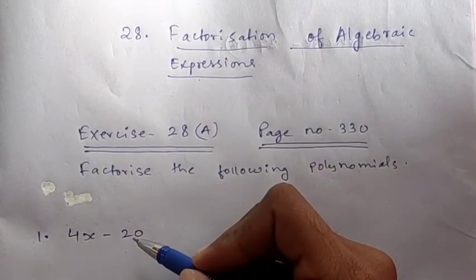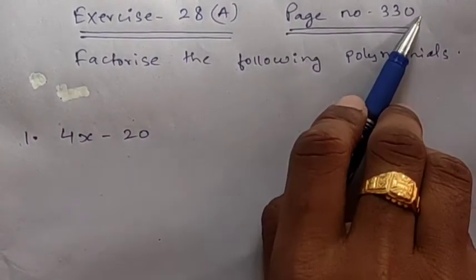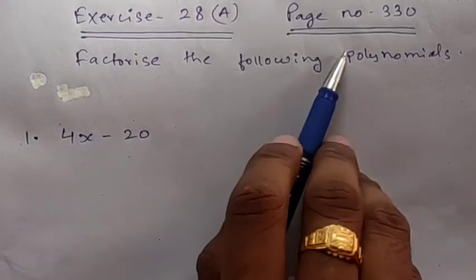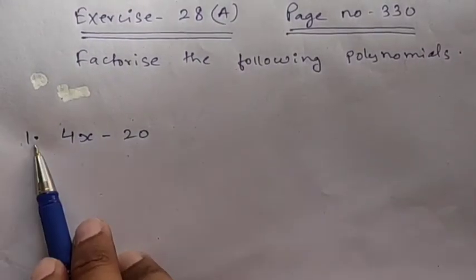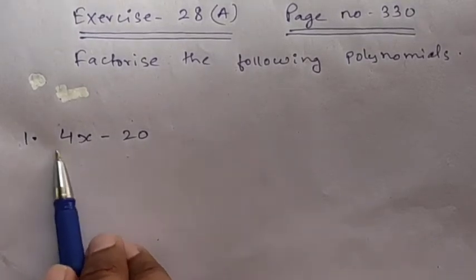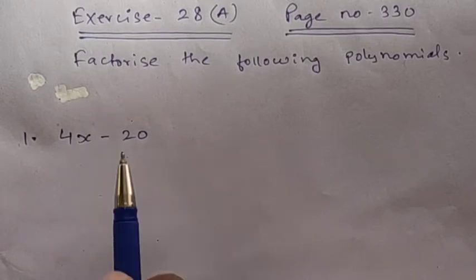Let us see one question then everything will be clear to you. We will be doing exercise 28A given in page number 330. The question is: factorize the following polynomials. The first one is 4x - 20. Now we will transform this expression in simpler form in such a way that the value will not change.